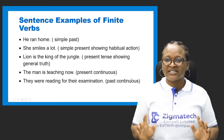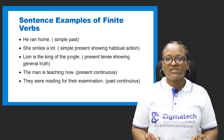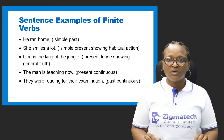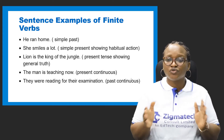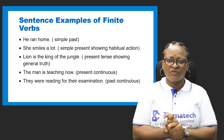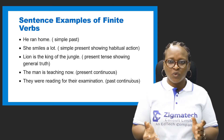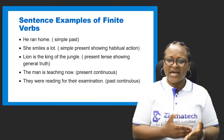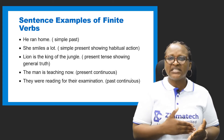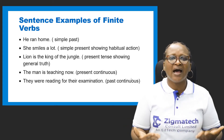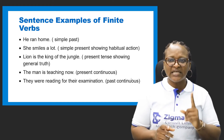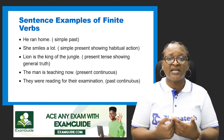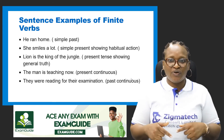Other examples: 'He ran home' — simple past. 'She smiles a lot' — habitual action. 'Lion is the king of the jungle' — present tense showing general truth. 'Is' connects with 'lion,' showing agreement, because we have just one lion it demands a singular verb. 'The man is teaching now' — present continuous, showing something ongoing. 'They were reading for their examination' — past continuous, with 'they' agreeing with 'were.'